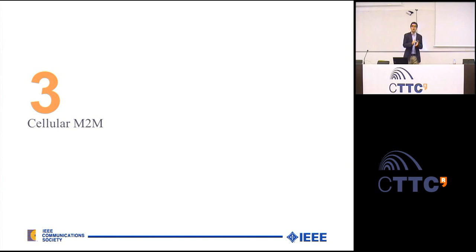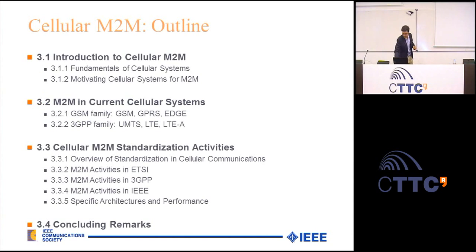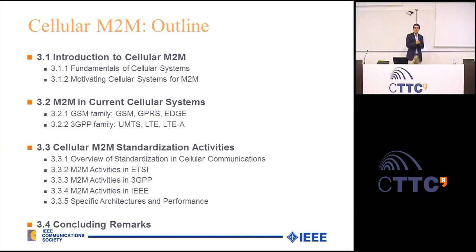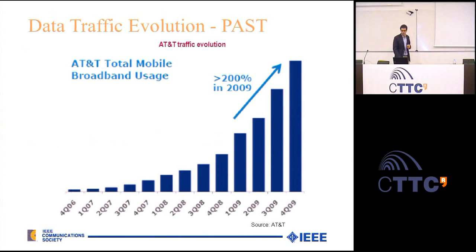In this tutorial we will also talk about the role of cellular networks in the M2M picture. We go through the fundamentals of cellular systems and discuss how they can have an important role in deploying M2M applications. We will discuss how well existing technologies and future technologies such as LTE Advanced can be for the deployment of M2M applications. An important part of the tutorial will be focused on the main standardization activities carried out by ETSI and 3GPP.